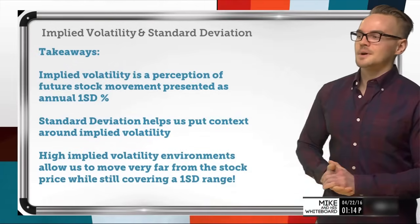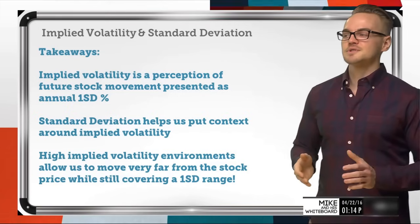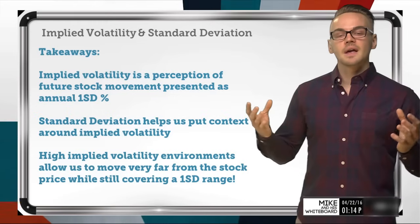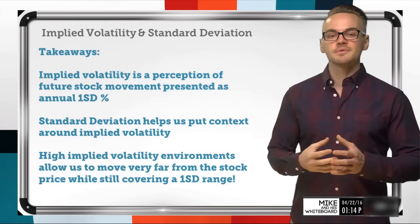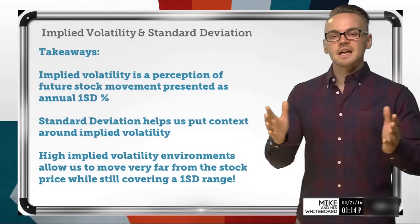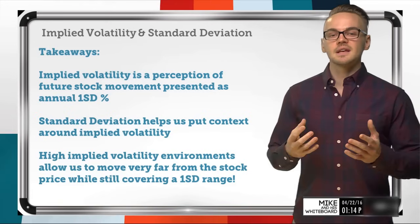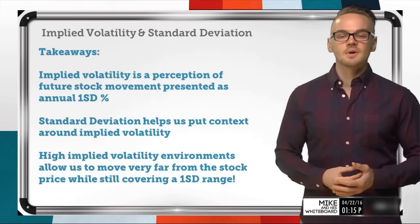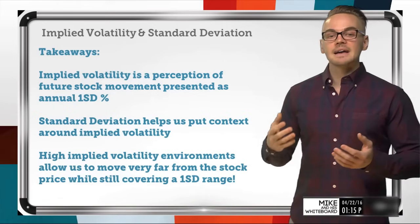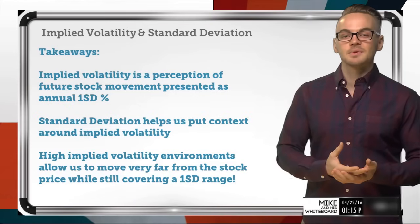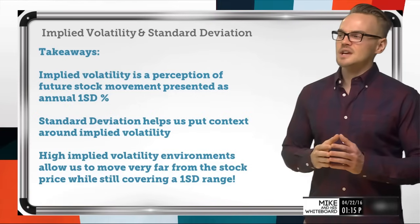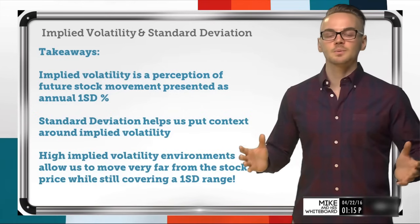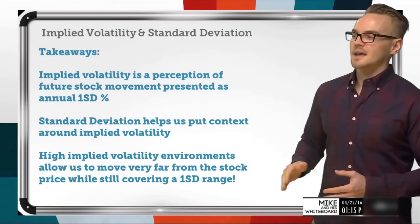Let's wrap all this up with some takeaways. The very first takeaway: implied volatility is a perception of future stock movement — it's not guaranteed, it's just a way to analyze the option price market and gauge exactly where traders think an underlying is going to go. Standard deviation is just a way to put context around implied volatility, just like IV rank and IV percentile give us context around implied volatility.